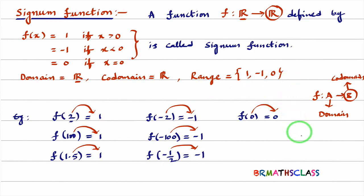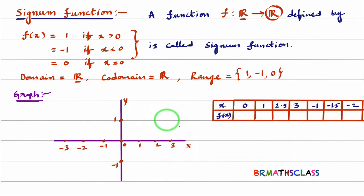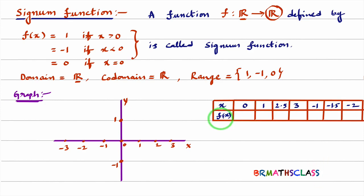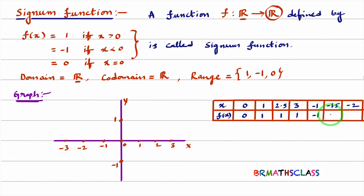Now we will learn how to draw the graph of the signum function. To draw the graph, I consider a coordinate axis with x-axis and y-axis. I will consider some x values since I cannot take all real numbers. When x is 0, f(0) is 0. When x is 1, as 1 is greater than 0, f(1) is 1. When x is 2.5, f(2.5) is 1. When x is 3, f(3) is 1. When x is minus 1, f(minus 1) is minus 1. When x is minus 1.5, f(minus 1.5) is minus 1. When x is minus 2, f(minus 2) is minus 1.